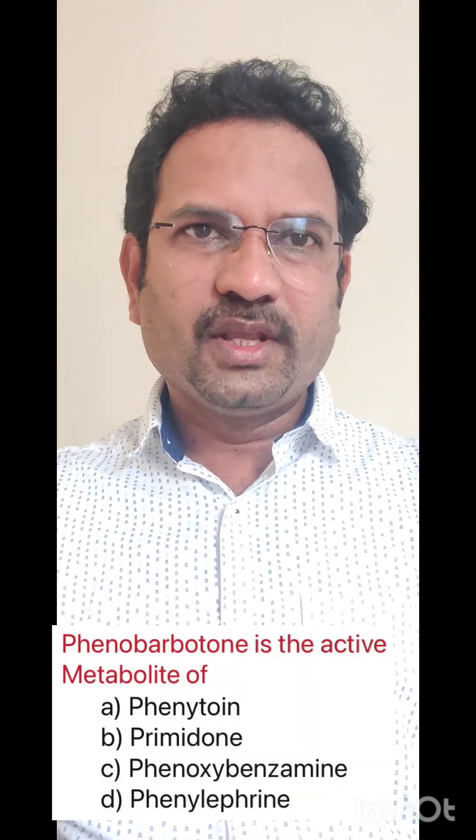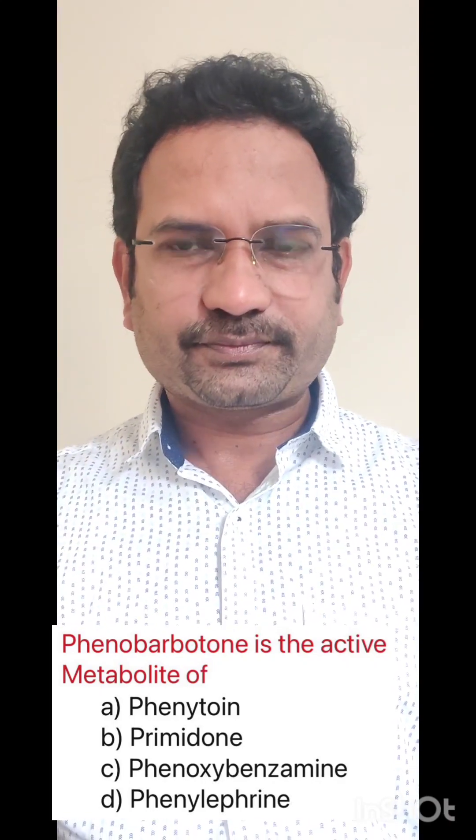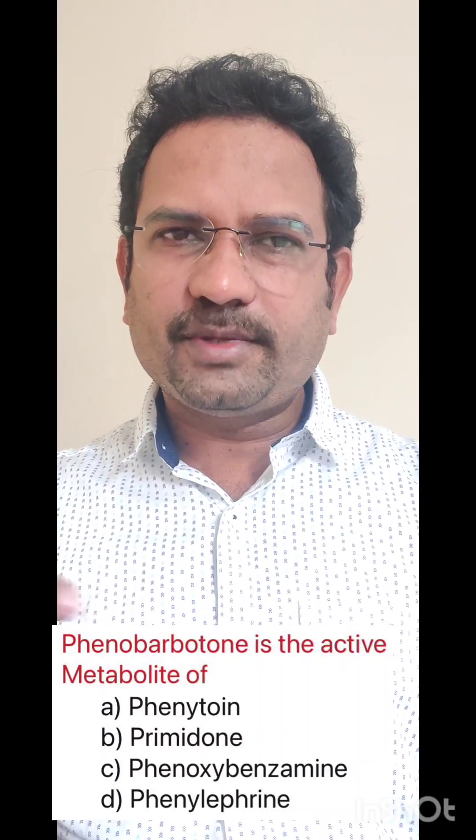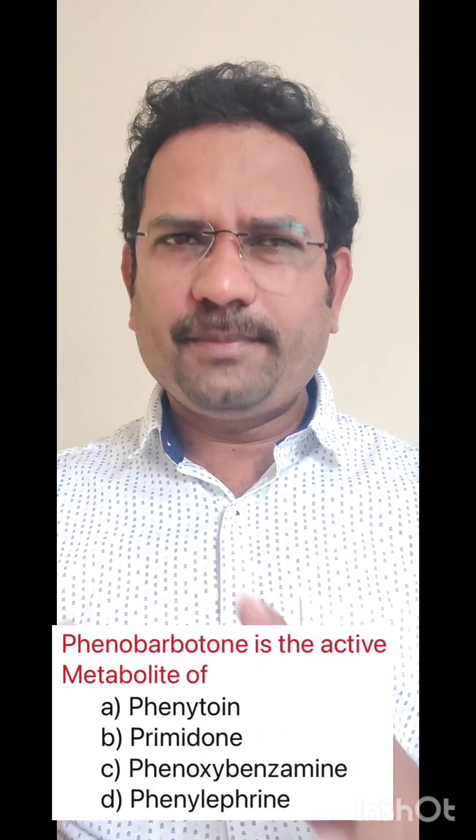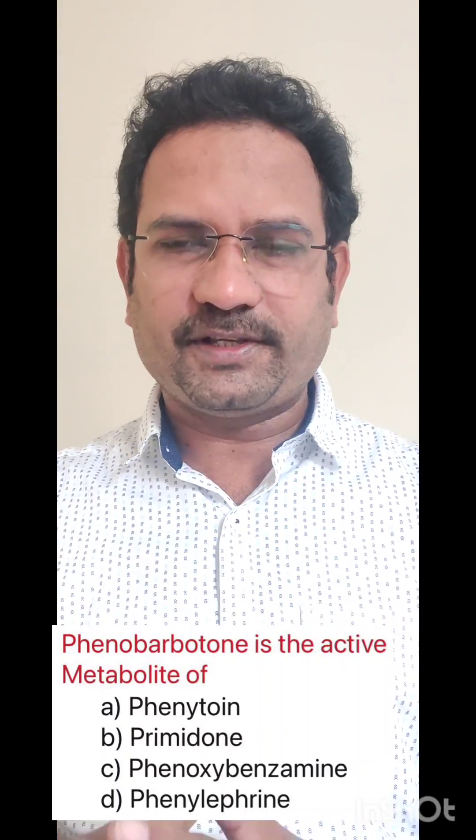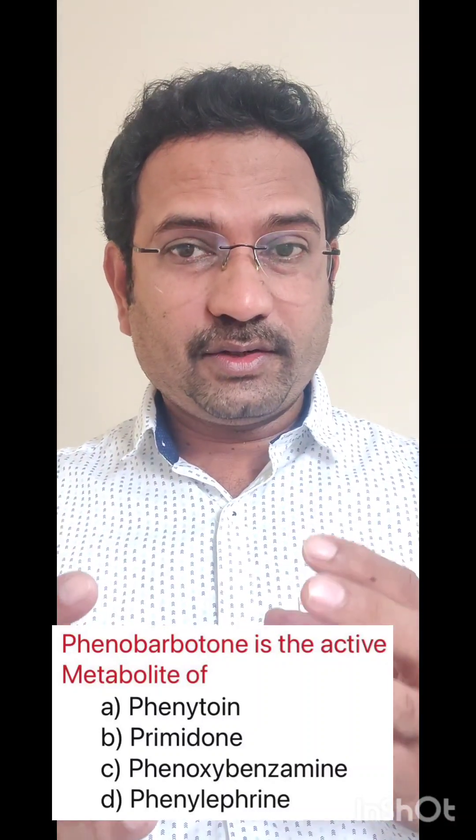This question is related to metabolism. Phenobarbitone is the active metabolite of which drug? Options are phenytoin, primidone, phenoxybenzamine, phenylephrine. Primidone, phenobarbitone, and phenytoin are drugs used to treat epilepsy. Primidone undergoes oxidative metabolism and results in two active metabolites — one of which is phenobarbitone. This is called bioactivation: after metabolism, the metabolite also shows activity.